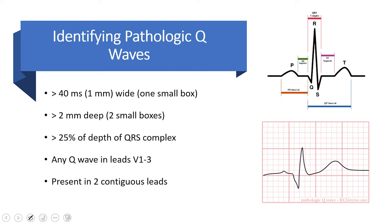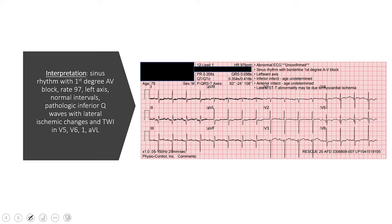Just a reminder on a normal QRS complex: the Q wave should be very tiny, very narrow — it's just the initial downward deflection before the big R wave, and then the other downward deflection of the S wave. A pathologic Q wave has criteria to recognize it: it needs to be one small box wide, two small boxes deep, and about 25% of the depth of the QRS complex — though I don't really pay much attention to that last one. But any Q waves ever in leads V1 through V3, and present in two contiguous leads.